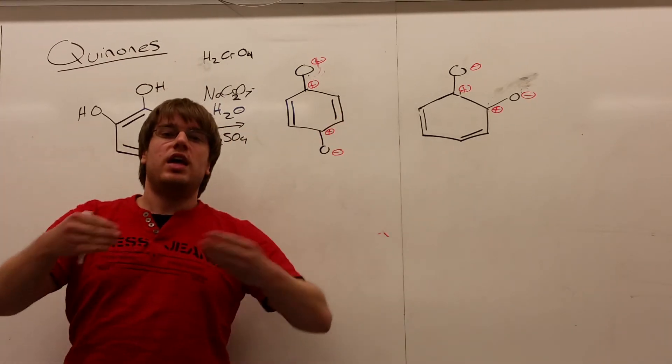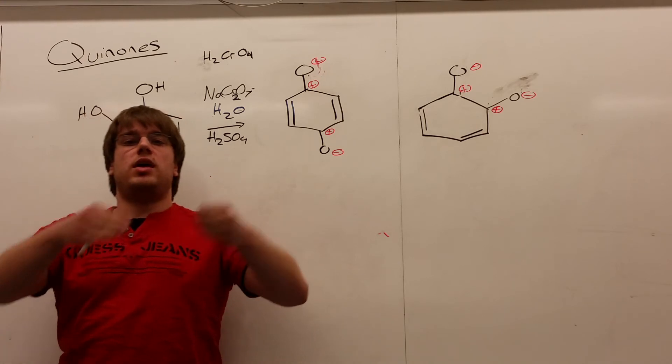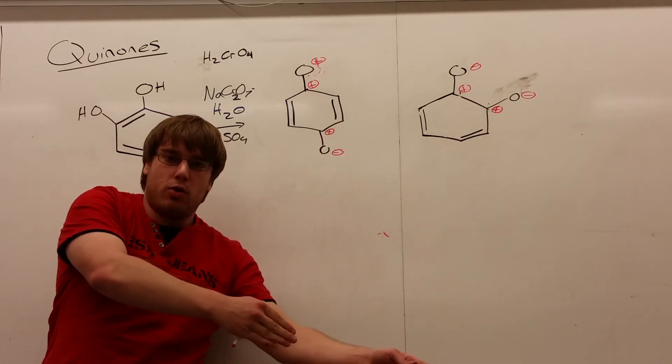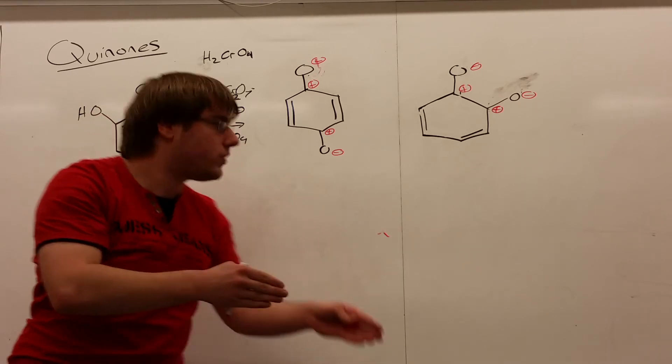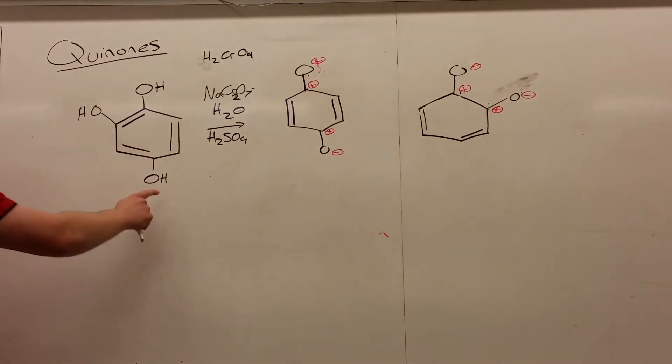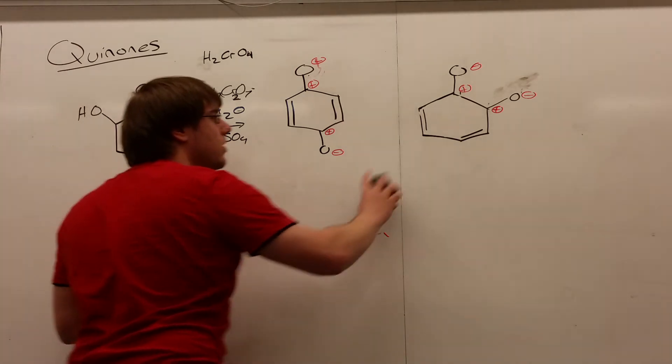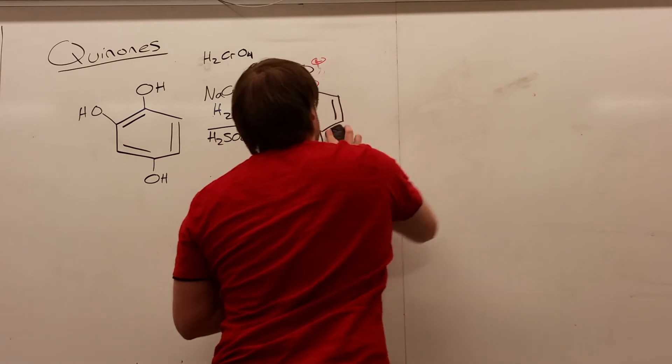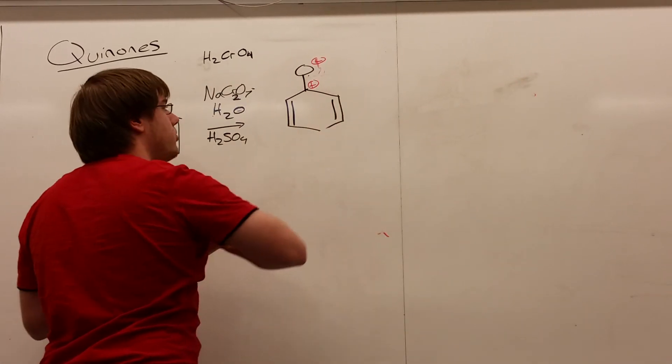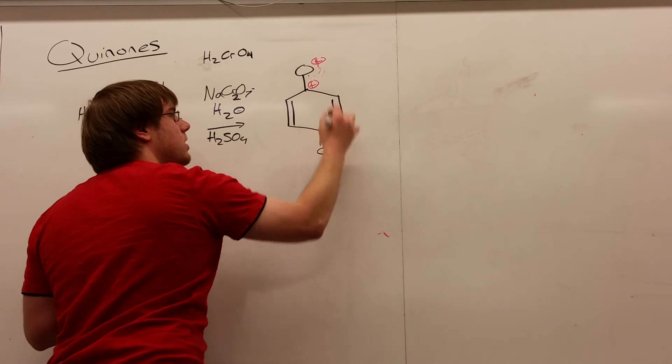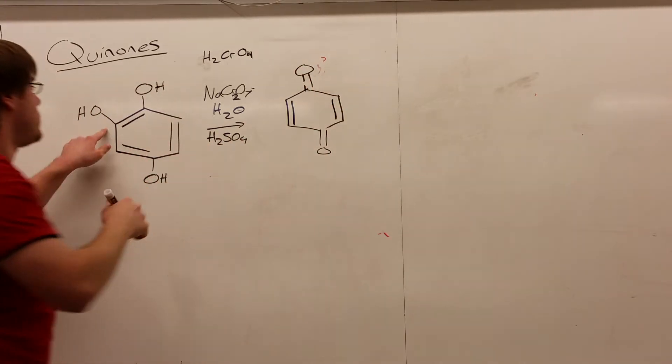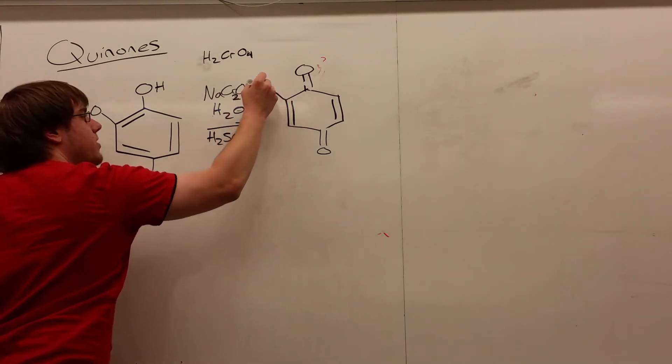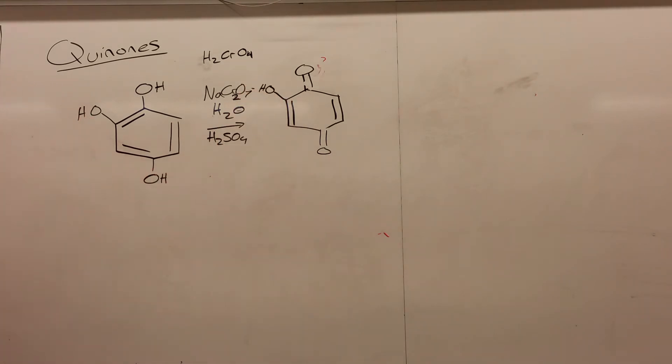So, ultimately, what that means for you is if you have the option of making a paraquinone or an orthoquinone, the paraquinone is always more favored and faster to form. Meaning, if you're looking for the answer to this question, what is going to be your final product? It's going to be the one where your quinone forms in the para positions like that. And then, this OH remains exactly the same. It had no involvement in the reaction whatsoever.